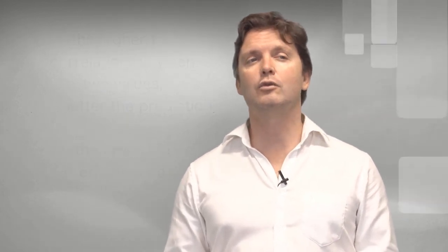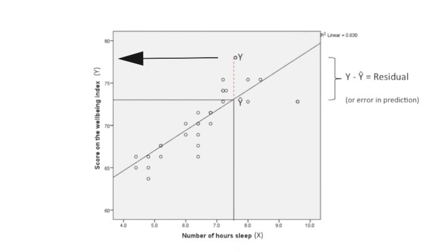So in the example, it looks like the wellbeing score of the person was actually 78. Yet the line of best fit predicted a wellbeing score of 73. This gives an error of prediction for this individual that's approximately five.